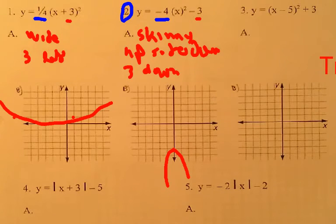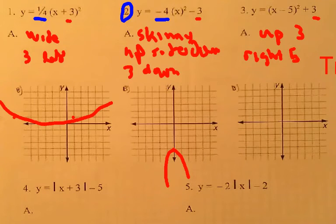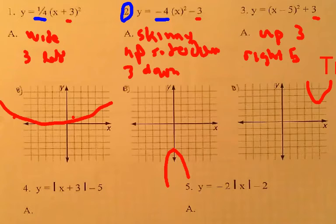What about this one? This one is up three, because of that number, and right five. Up three, right five. One, two, three, right there. Normal-sized parabola.